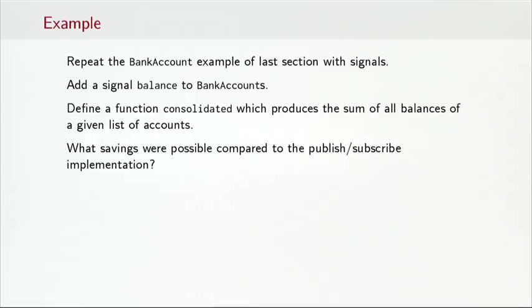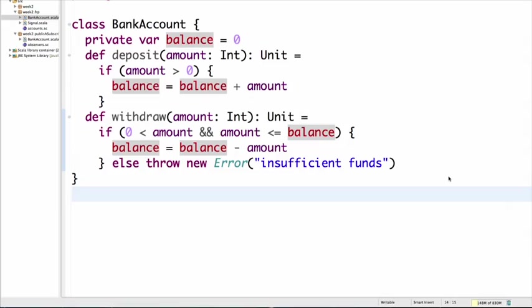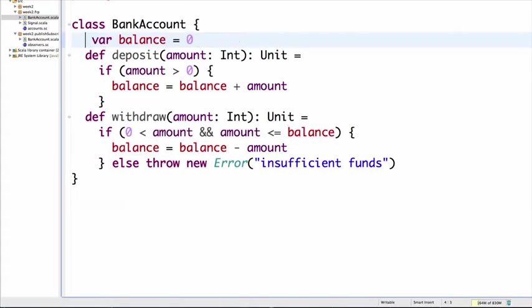We're going to repeat now the bank account example we've seen in the last section with signals. We will add a signal called balance to bank accounts and we will define a function consolidated which produces the sum of all balances of a given list of accounts. So I have on screen my class BankAccount from essentially the original example without any event handling, deposit and withdraw method and this variable balance. How do we make this into a source of an FRP signal? Well, one approach would be to say, let's make balance a signal. So it would be a val and that would be a Var(0). So balance is still a variable, but now it's a signal.